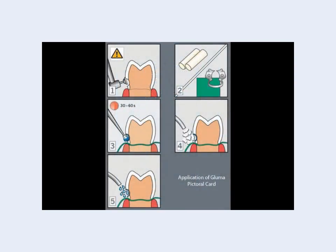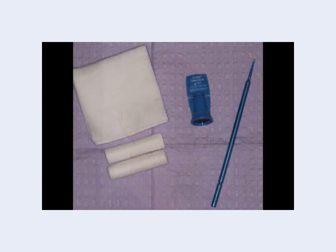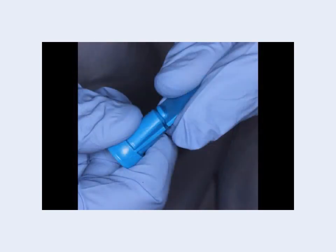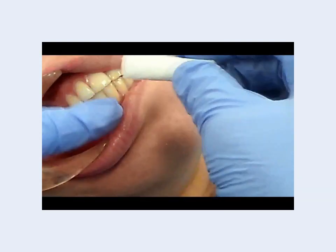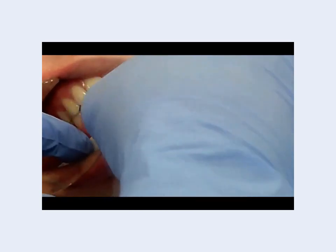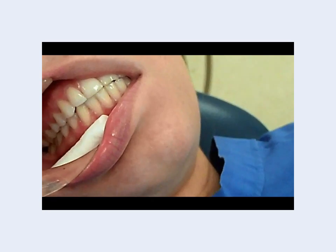The manufacturer of GLUMA makes the application easy to remember. They include a visual card that shows the application sequence. In this application, the patient — like most patients that GLUMA will be placed on — is sensitive to air and cold. After gathering the necessary supplies, open the GLUMA desensitizer by twisting the top in one direction until you hear a snap. Place a cotton roll in the buccal vestibule to isolate the area and ensure that the cheek and tissues are not within the working zone.